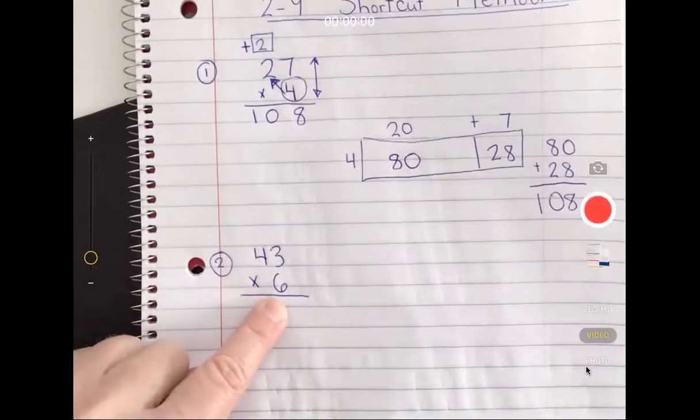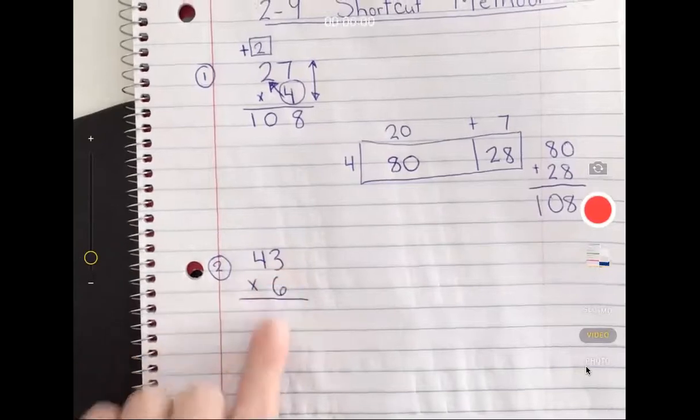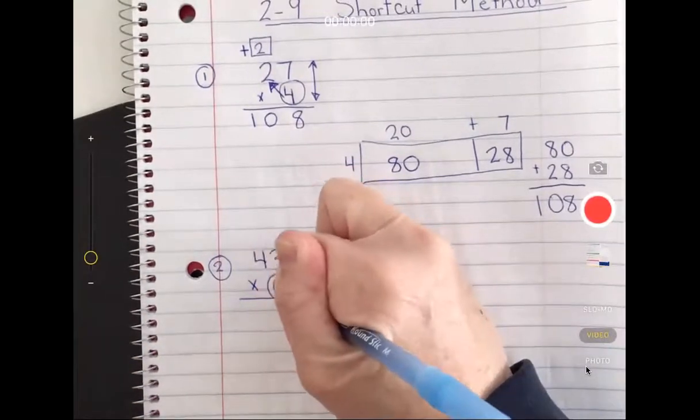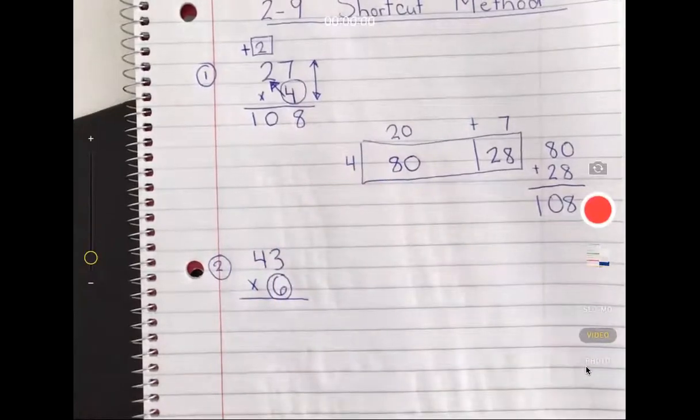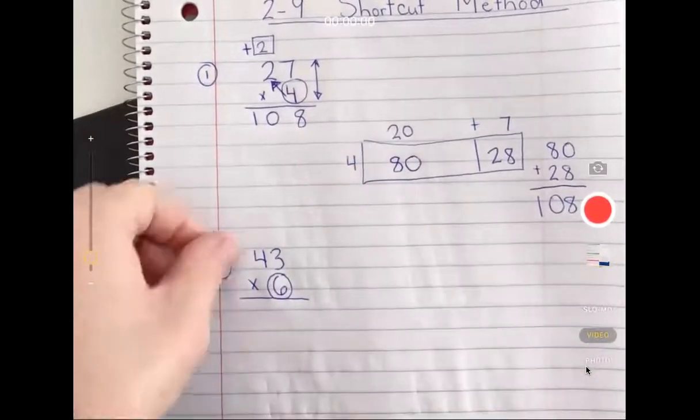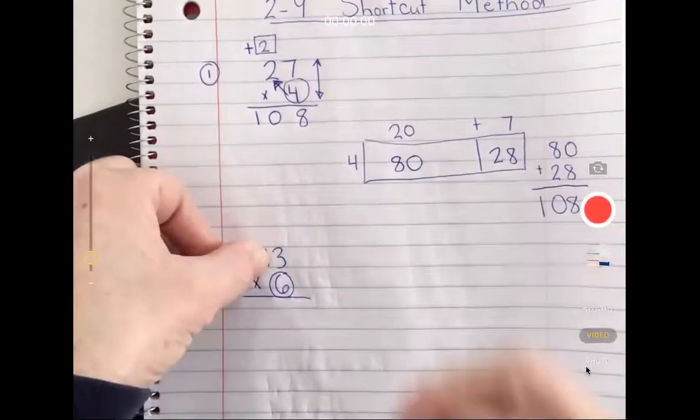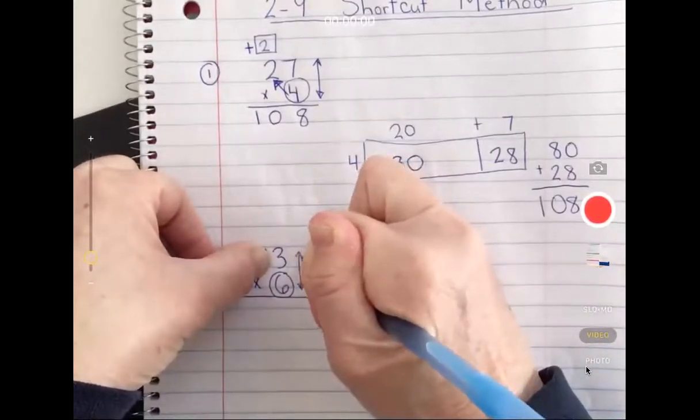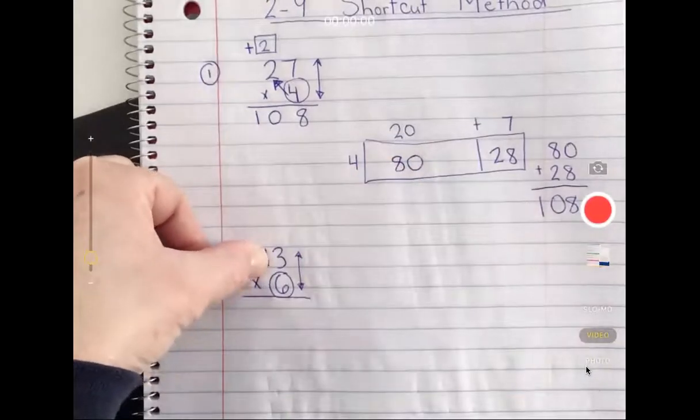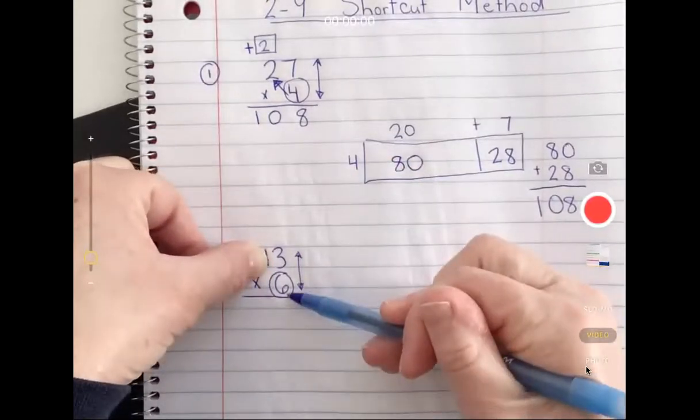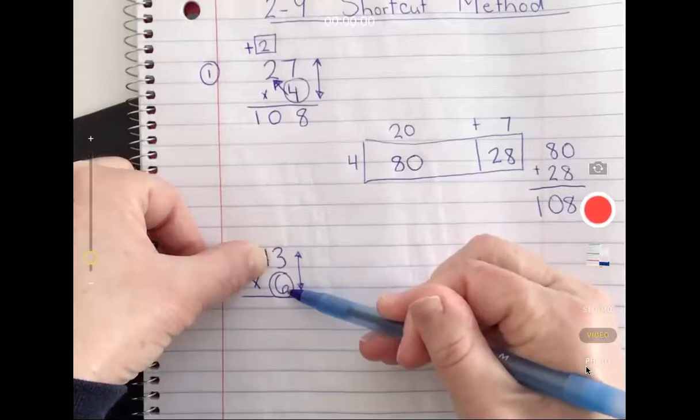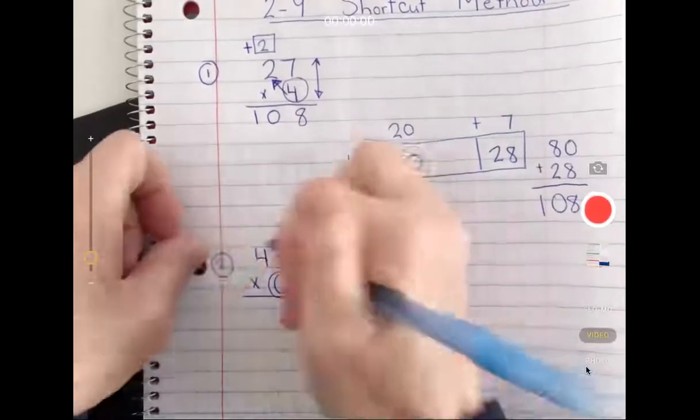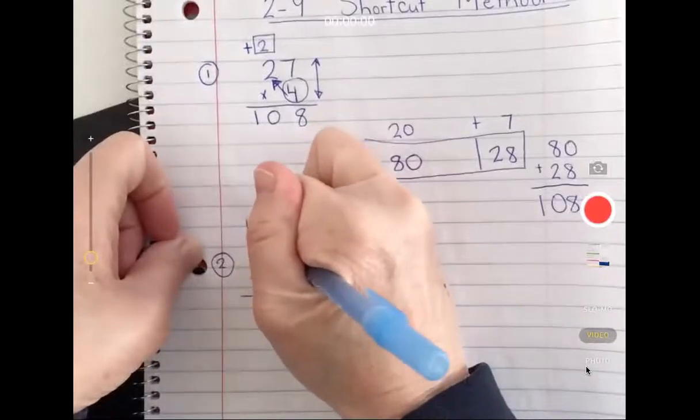I'm making sure my larger number is on top, my single digit is on the bottom and it's lined up in the ones place. I'm going to circle the six because that tells me the six is in charge. I'm going to pretend the four isn't there. I'm thinking six times three, I know that's eighteen. My eight goes down, my one gets brought up over the four.